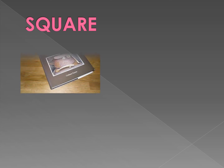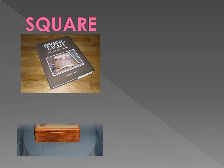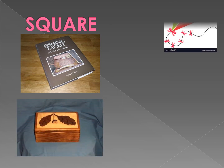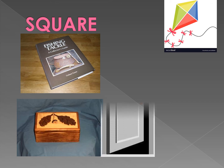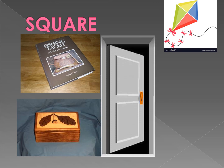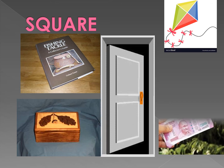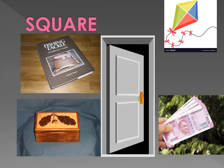See the examples: like Book, Box, Door, Note. These are square shapes. Now you can understand by picture. Square shape has four sides and is a closed shape.